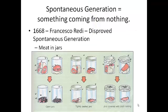Moving on to spontaneous generation — it is something coming from nothing. That is what they thought back in the 1600s, that something came from nothing. Just like if you put hay in your barn, then you would have mice. If you put a broom in a corner, you would have mice. And as you see down below with Francisco Redi, he said if you have meat, then you have flies.